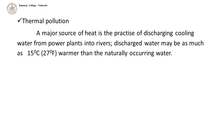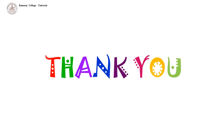Thermal pollution: a major source of heat is the practice of discharging cooling water from power plants into rivers. Discharged water may be as much as 15 degrees Celsius (27 degrees Fahrenheit) warmer than the naturally occurring water.